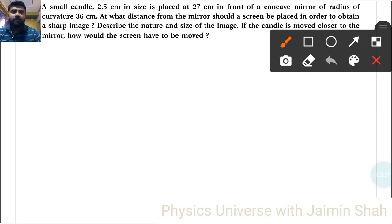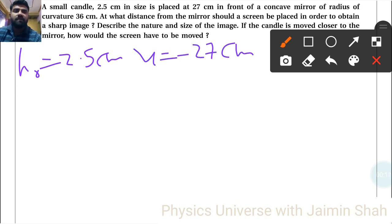A small candle 2.5 centimeter in size is placed, so HO is equal to 2.5 centimeter, at 27 centimeter in front of a concave mirror of radius of curvature R is equal to minus 36 centimeter. U is equal to minus 27 centimeter, F is equal to minus 18 centimeter.